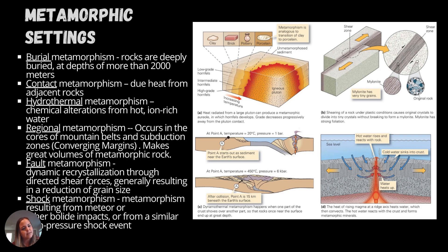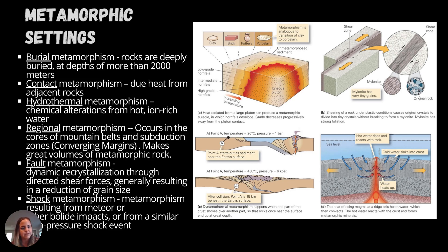Where do metamorphic rocks come from? They form in a few different ways, which we call metamorphic settings. The biggest and most common is burial — things are buried deeper and deeper. We also have contact metamorphism, hydrothermal metamorphism, regional metamorphism, fault metamorphism, and shock metamorphism.